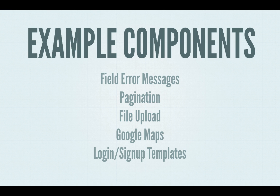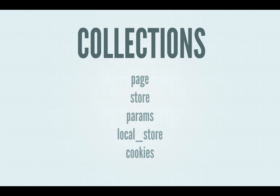Tags can have attributes that can also bind to values. We already have some example components that we've been working on — things like field error messages, pagination, file upload, Google Maps, login, and sign-up templates. We expect the component ecosystem, especially using gems, to make it really easy to build apps, because a lot of the common things that we do as web developers will get abstracted into easily reusable components.